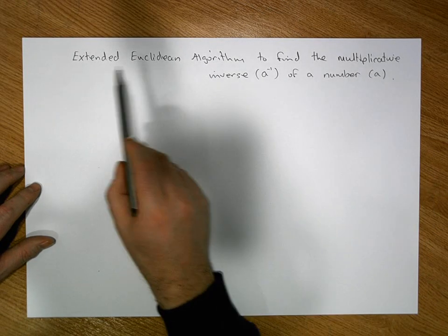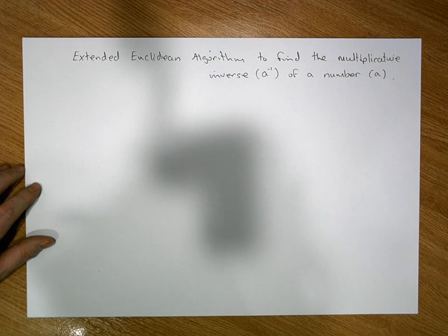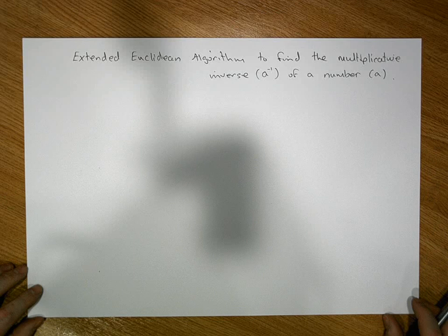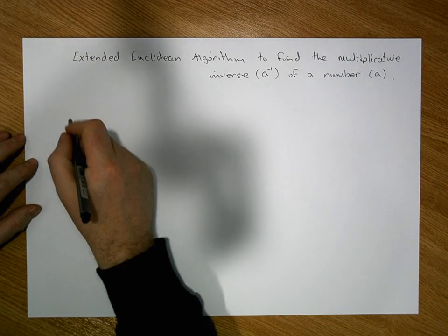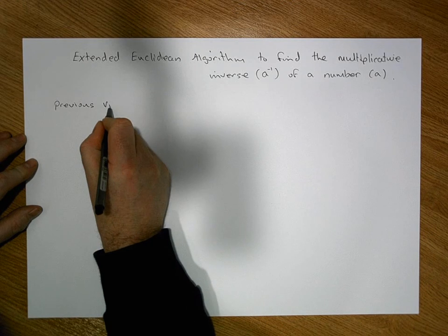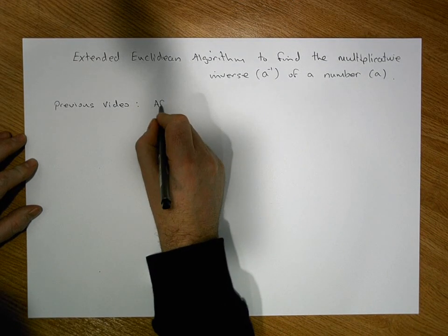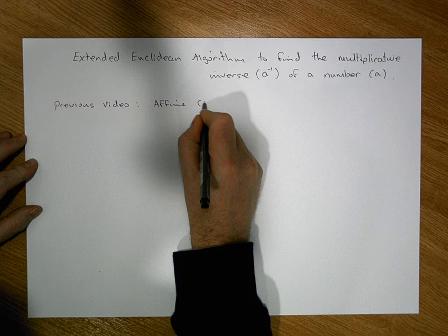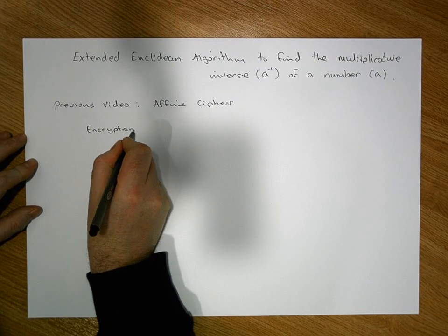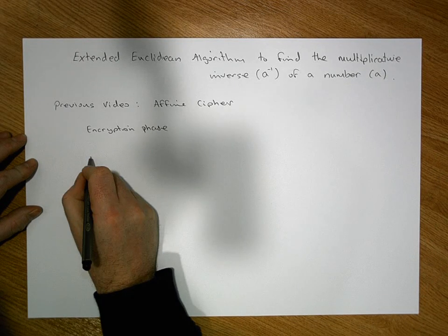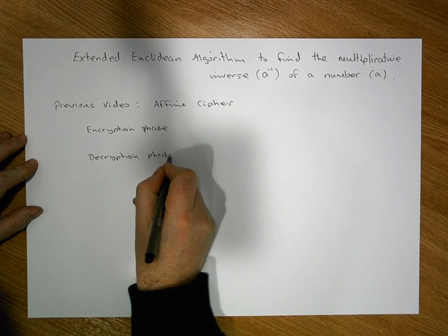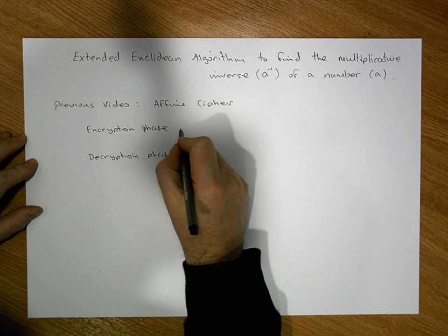We'll be using the extended Euclidean algorithm. The reason I'm doing this is in relation to a previous video where we dealt with the affine cipher. That cipher had two phases: an encryption phase and a decryption phase.